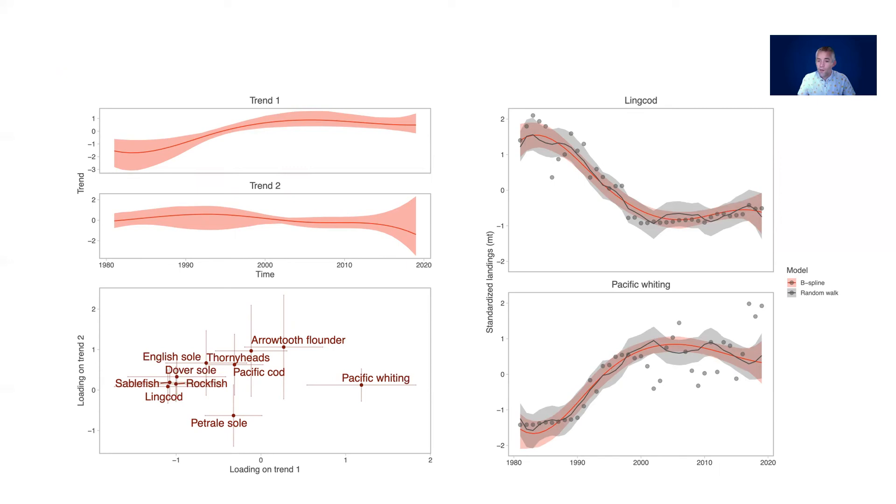Looking at the data on the right, the raw data for most of these species is not super variable year to year so it seems like there is a high signal to noise ratio and we get more precise credible intervals than we do from the random walk model.